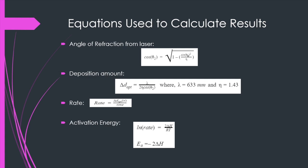To calculate the results we have the following equations. The first one calculates the angle of refraction from the laser and is equated to the square root of 1 minus sine theta 1 squared over nu. Theta 1 is the angle of the laser and nu is a refractive index. To calculate the deposition amount, the film thickness is equated to the wavelength of the laser over 2 nu cosine theta 2.